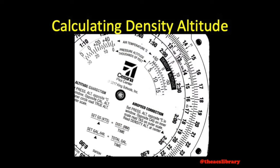One thing to point out is that positive temperature values are to the left of the zero, which throws a lot of people off. Try not to let that catch you off guard. Once we have these values aligned, we read density altitude in the window just above the marker depicted. Here, we have a density altitude of just about 8,000 feet.